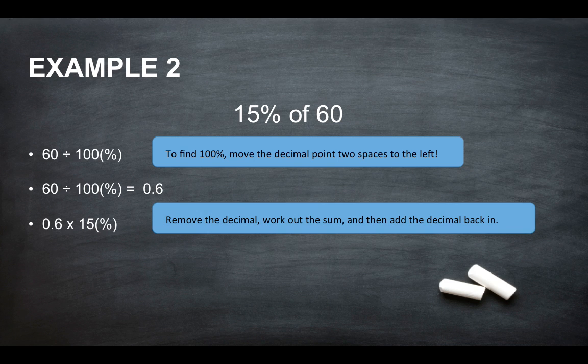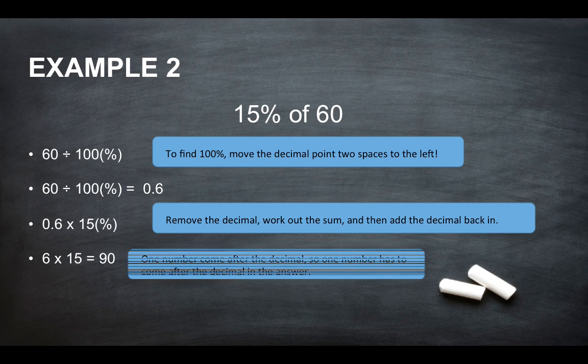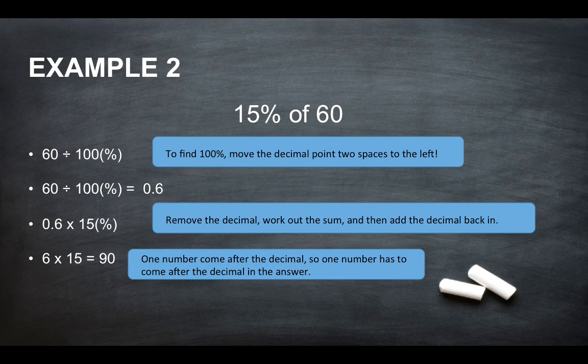Remove the decimal, work out the sum and then add it back in at the end. So we'd do 6 times 15 to give us 90.